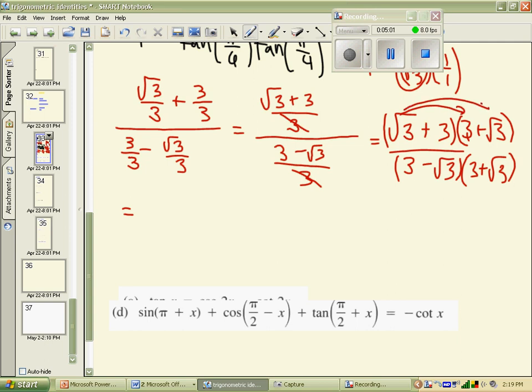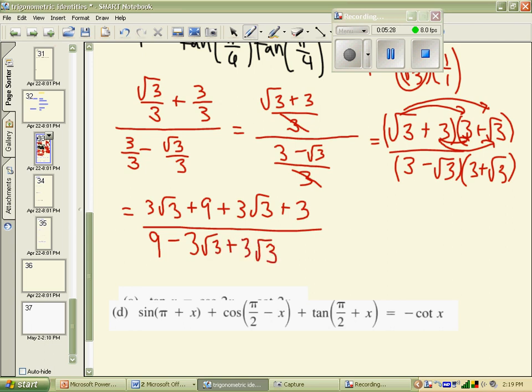So, I'm foiling this out with our binomial expansion theorem. We would have 3 root 3 and 9 and another 3 root 3 and a 3 when you do first, outside, inside, last. In the denominator, we would have 9 minus 3 root 3 plus 3 root 3 and subtract 3. No surprise, the radicals go away. That was the point of this step.